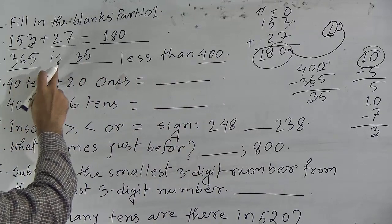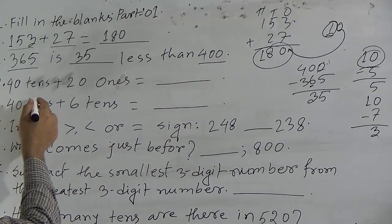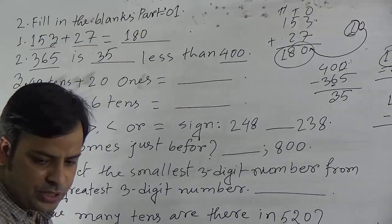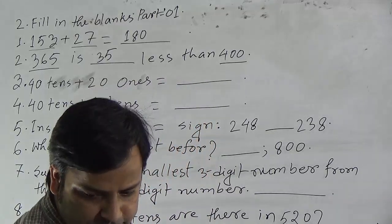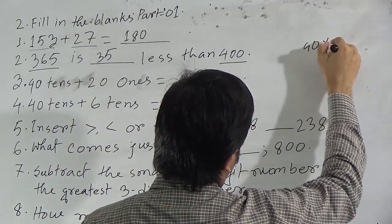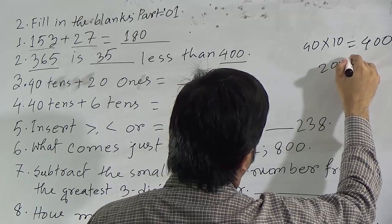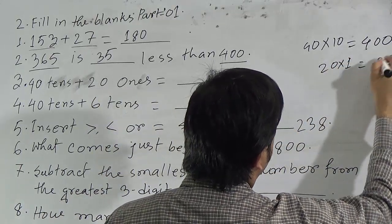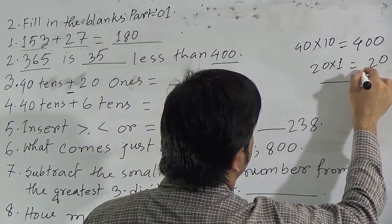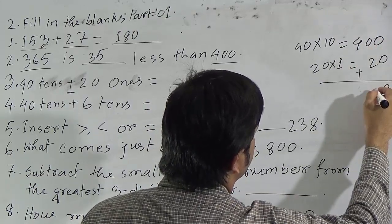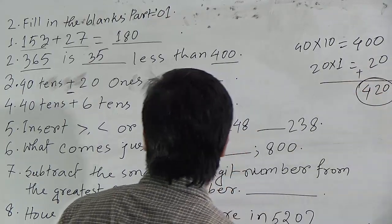Question 3: 40 tens plus 21 ones. 40 tens means 40 multiplied by 10, which equals 400. 21 ones means 21. Now we add 400 and 21: 0 plus 1 is 1 — wait, 0 plus 0 is 0 in ones, 0 plus 2 is 2 in tens, and 4 in hundreds. Our answer is 420.